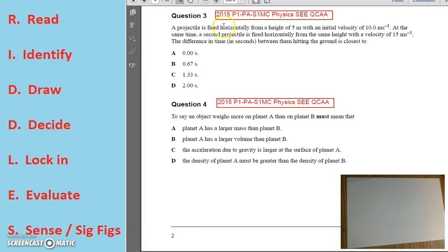The first thing to realize is that the first object is fired horizontally and therefore it has an initial vertical velocity of 0. The second projectile is fired horizontally and therefore it also has an initial vertical velocity of 0.